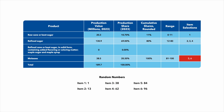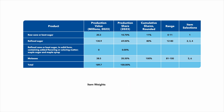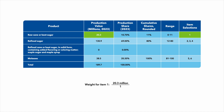And 2 molasses items since random numbers 84 and 96 are between 81 and 100. Our item weights are then calculated as the production value of the selected category divided by the number of items selected. For example, 20.3 million divided by 1 gives us the weight for item 1.